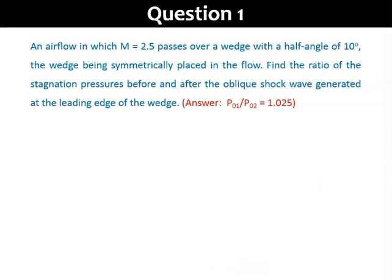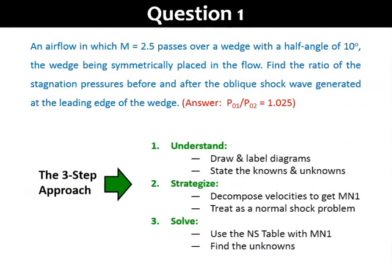In question 1, a supersonic flow with M equals to 2.5 passes over a wedge with a half angle of 10 degrees. The wedge is placed symmetrically in the flow, which means the angle of attack is 0. We need to find the ratio of stagnation pressures before and after the shock, which is P01 over P02. We'll divide our problem into three steps: understand, strategize, and solve.